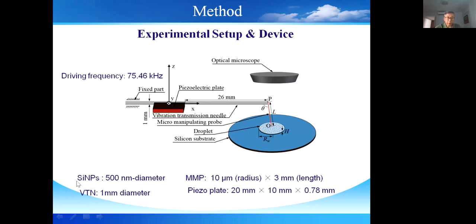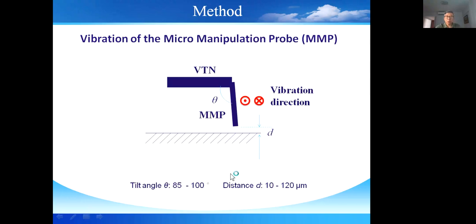In the experiments, we use silicon nanoparticles with a diameter of 500 nanometers. The radius of the microprobe is 10 microns. During the operation, the microprobe vibrates in parallel with the substrate. Also, the angle made by the vibration transmission needle and the microprobe is close to 90 degrees, and the distance between the probe and the substrate is about several tens of microns.